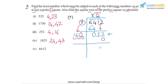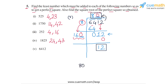Subtracting gives a remainder of 12. Because we get a non-zero remainder, 6412 is not a perfect square. We get a quotient of 80 and a remainder of 12. This means the largest number whose square is less than 6412 is 80, and 81 is the smallest number whose square exceeds 6412. So 6412 lies between the consecutive perfect squares 80² and 81².